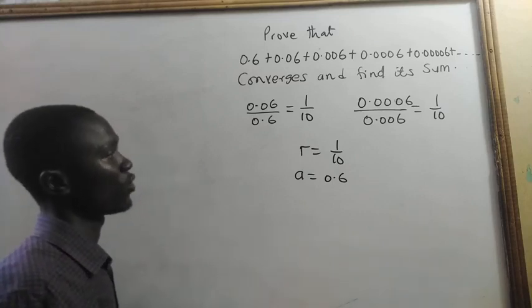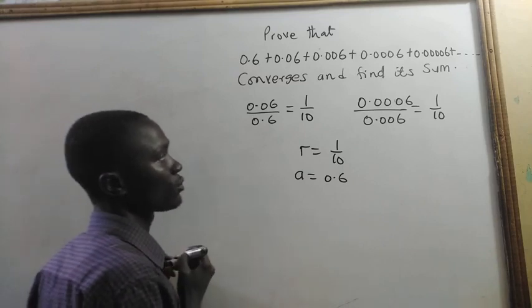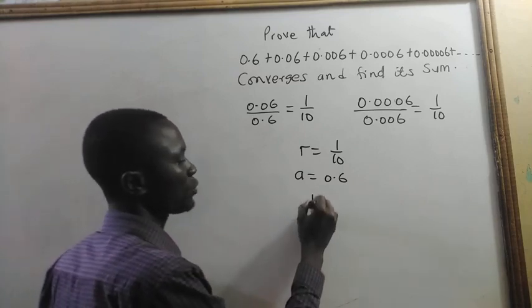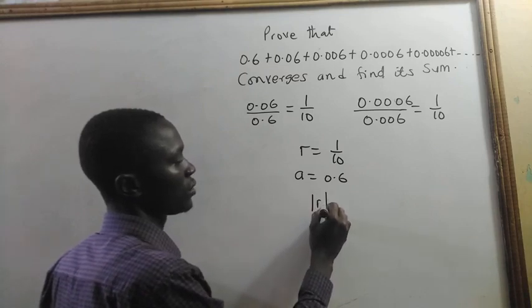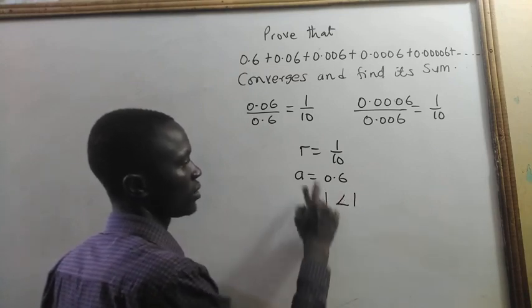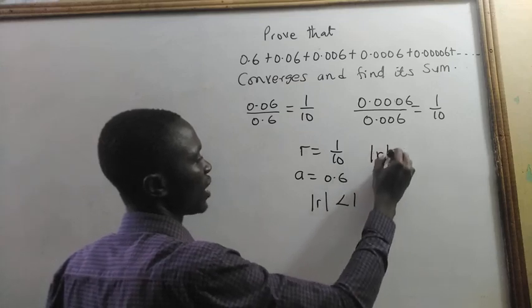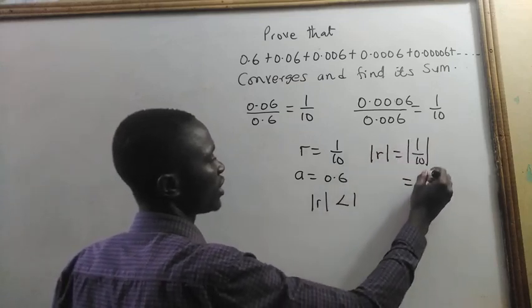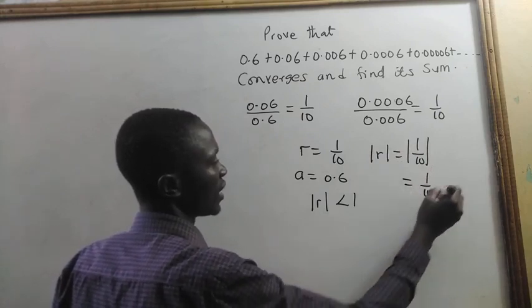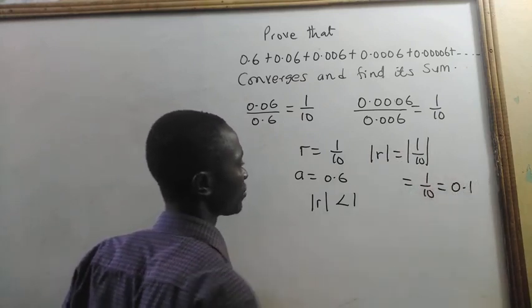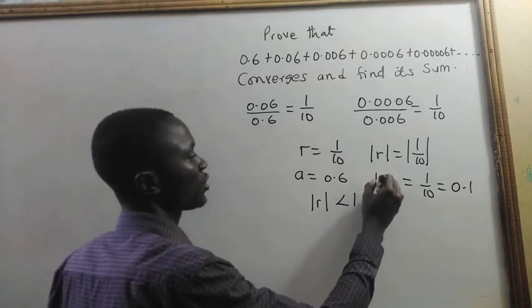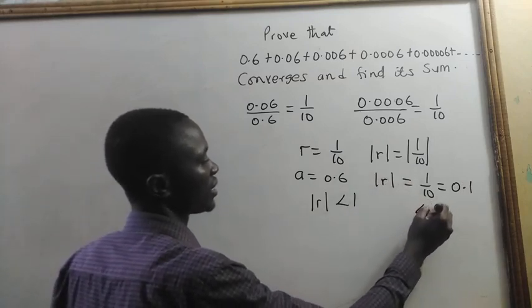We have to determine whether it converges. For a geometric series to converge, the absolute value of R should be less than 1. If we take the absolute value of R, that is the absolute value of 1 out of 10, we are still going to get 1 out of 10, and 1 out of 10 is 0.1. So the absolute value of R is less than 1.